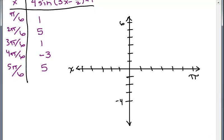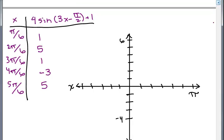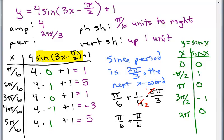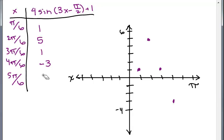Let's graph the key points. π over 6: go one space over and up 1 — that's our starting point. Then 2π over 6, up 5. Then 3π over 6, back down to 1. Then 4π over 6, down to negative 3. And 5π over 6 — I made an arithmetic error earlier: the last y-value is 1, not 5. The last key y from sine is 0, so 4(0)+1=1. So 5π over 6 maps to 1. Often you'll catch arithmetic mistakes once you start graphing.